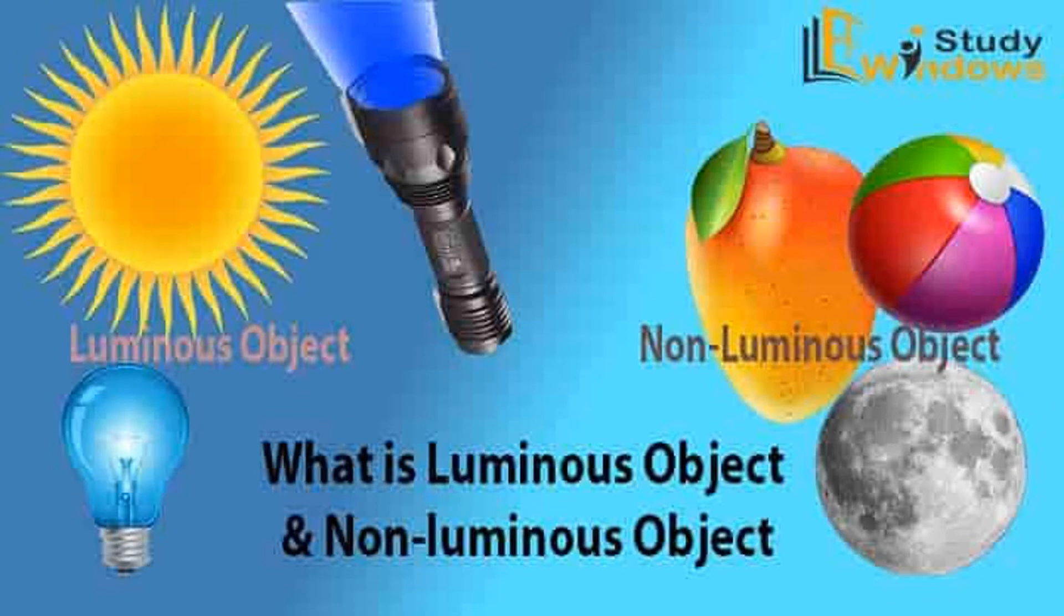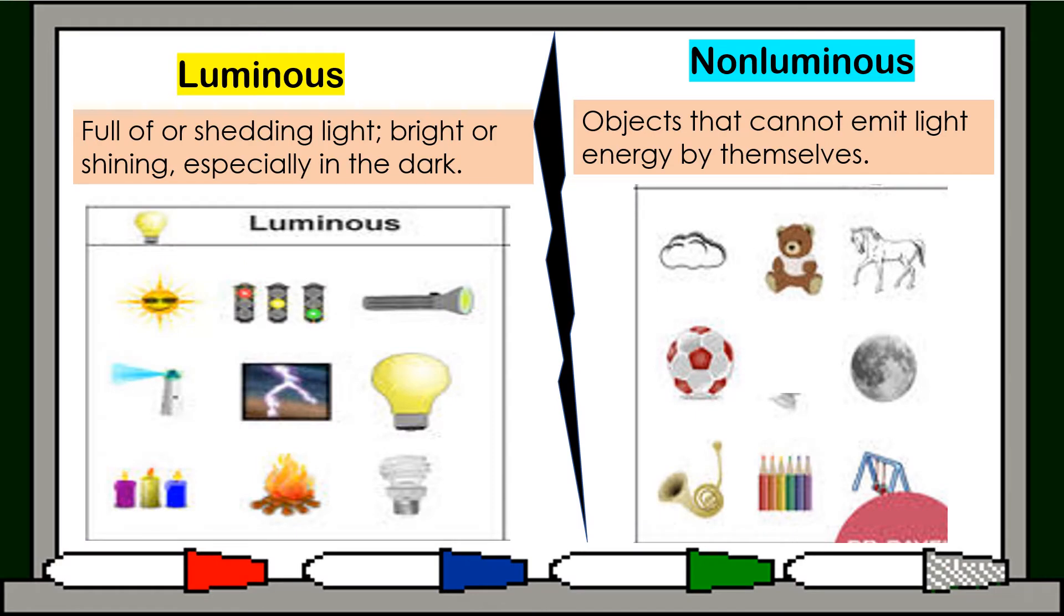Now we will tackle what is luminous object and non-luminous objects. When we say luminous, full of or shedding light, bright or shining, especially in the dark. So it means when we say luminous, it has light. For luminous, we have sun, street lights, flashlight, lightning, bulb, fire, candle, and many more.